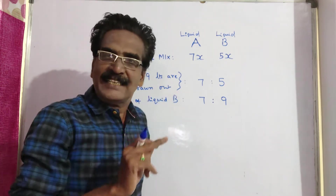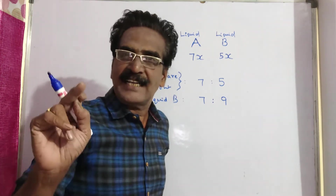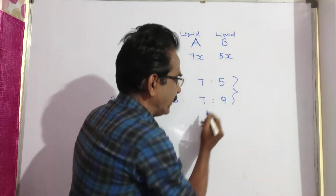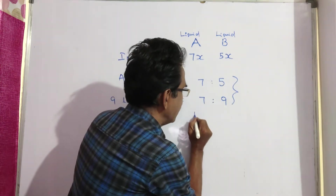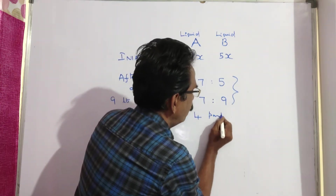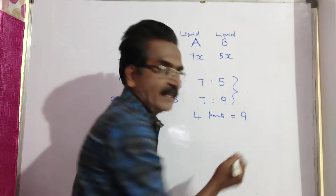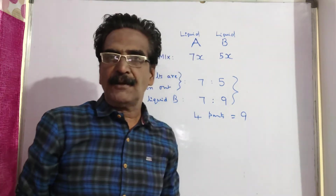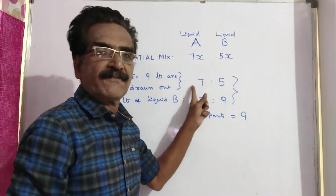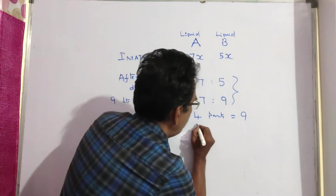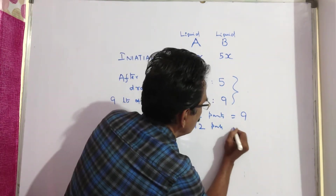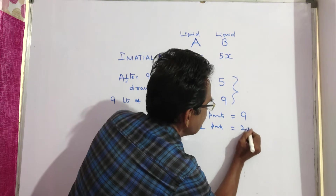So after adding 9 liters, 4 parts of liquid B has increased. It means 4 parts is equal to 9 liters. So 7 plus 5 equals 12 parts, and 12 parts is equal to 27 liters.